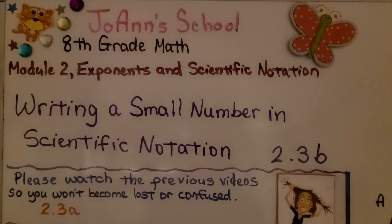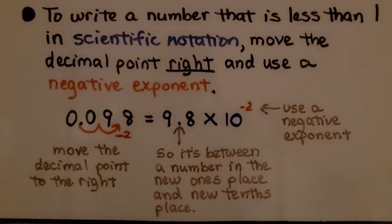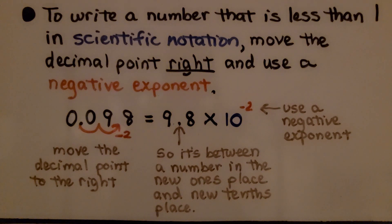Lesson 2.3b: Writing a Small Number in Scientific Notation. To write a number that is less than 1 in scientific notation, move the decimal point right and use a negative exponent.